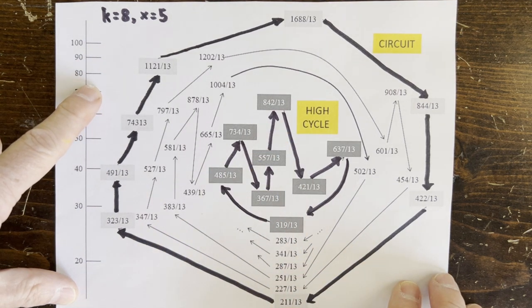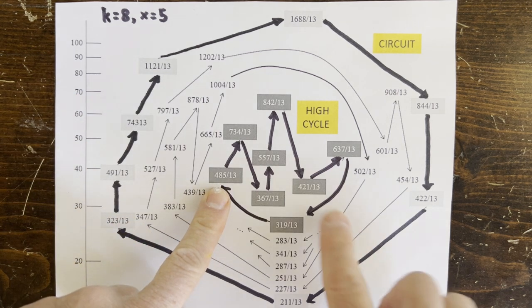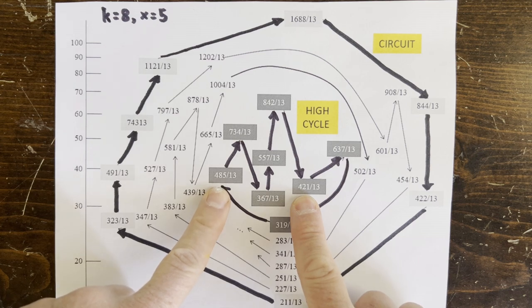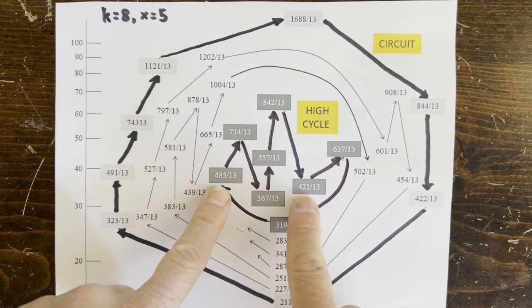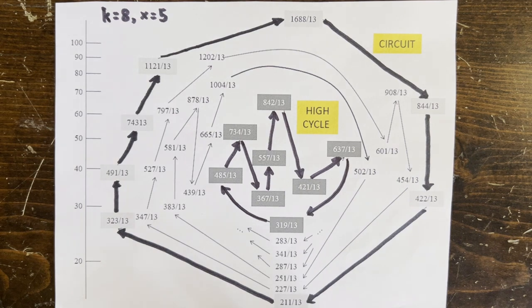And if we study this chart, we've found that 485 over 13 and 421 over 13 are in the same loop, which if they were both integers, so would be their difference 64 over 13. But 13 can't divide a power of 2, so this can't be an integer loop.